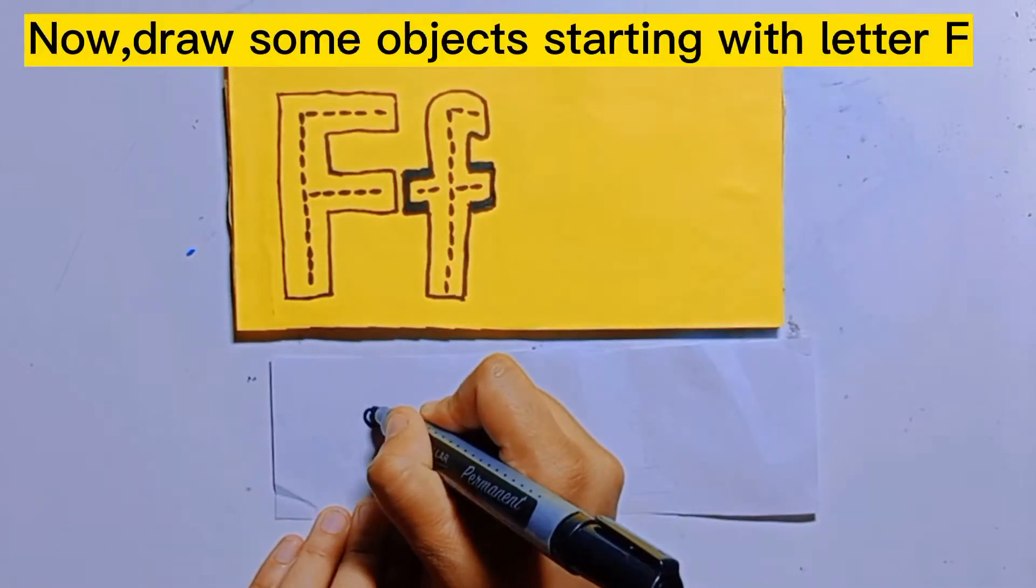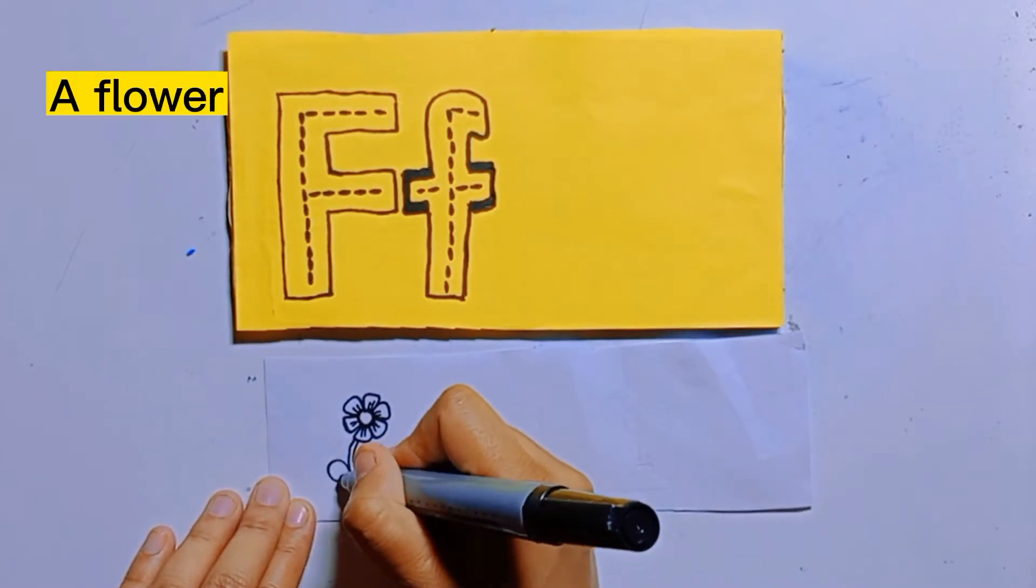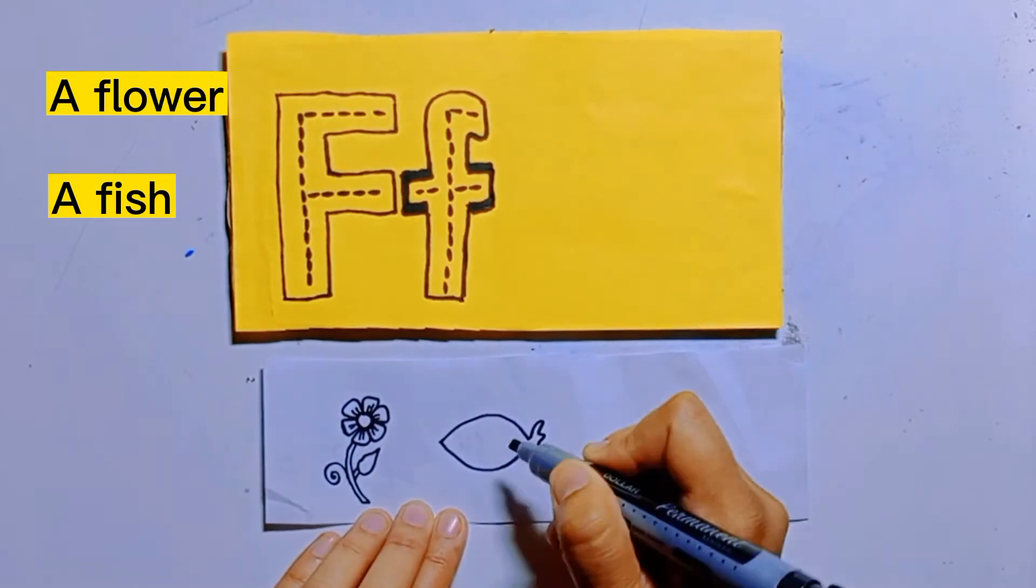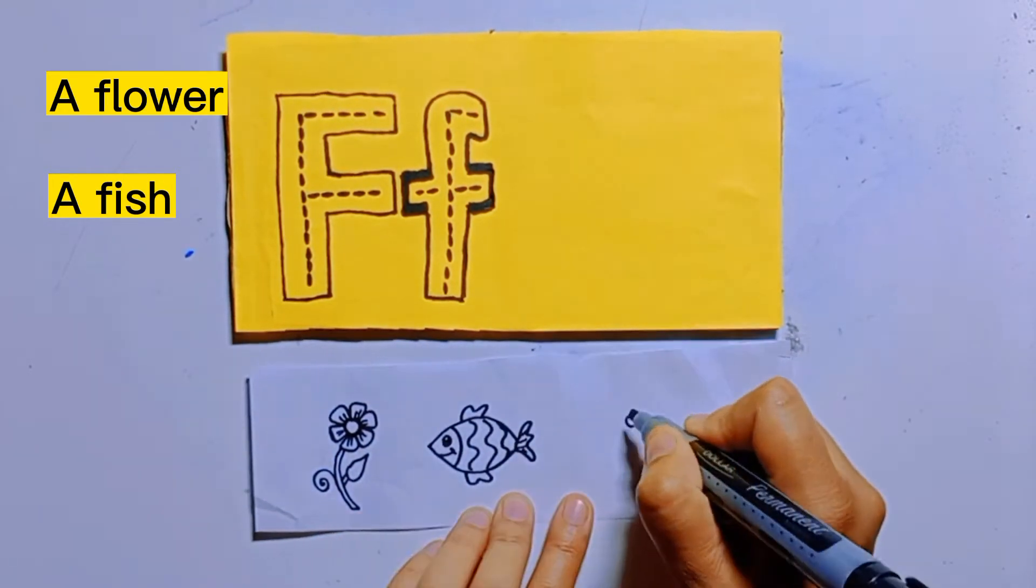Now draw some objects starting with letter F: a flower, a fish, and a fan.